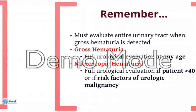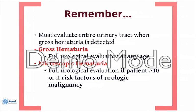People with gross hematuria almost always require a full urologic evaluation. Patients with microscopic hematuria may not always require a complete urologic evaluation, but patients over 40 generally need investigations of both their upper and lower urinary tract. Patients with risk factors or urologic disease with microscopic hematuria, regardless of age, would require a full investigation of the urinary tract.